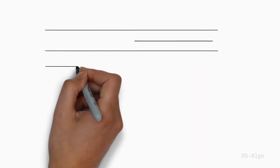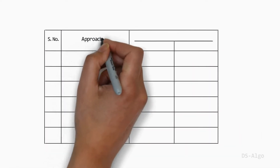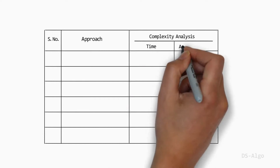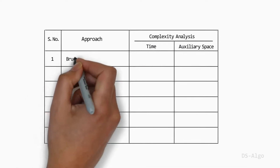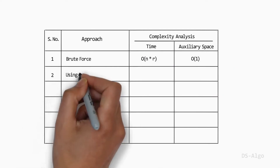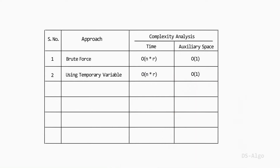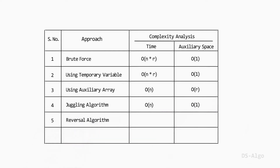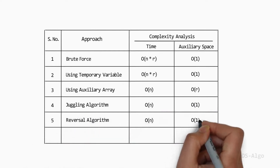Here I am listing 6 different approaches with their time complexity and auxiliary space used by each algorithm. Later on, we will see how the time complexity and auxiliary space of algorithms is calculated step by step. The approaches we are going to discuss are: brute force, using temporary variable, using auxiliary array, juggling algorithm, reversal algorithm, and block swap algorithm.